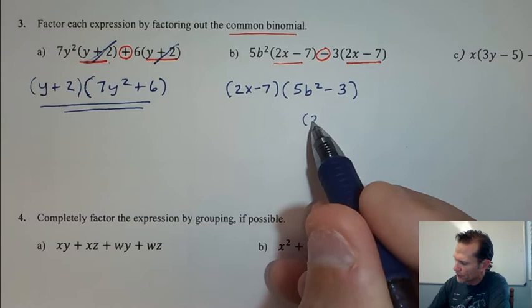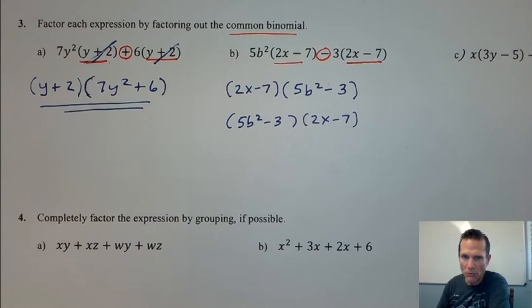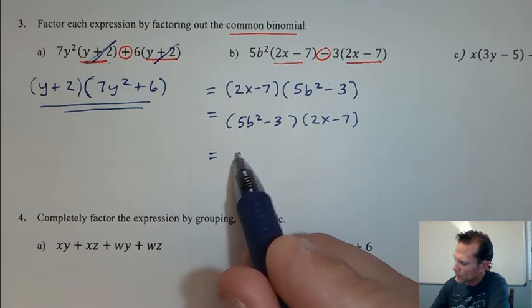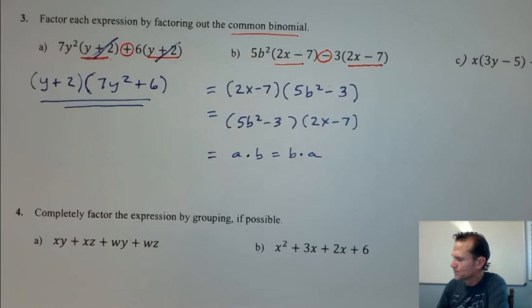Now some students choose to, and it's not wrong, they choose to write their common binomial on the right side and then put the leftover pieces in the front. And if you look there, those are the same thing because of something you learned back in elementary school. We learned that a times b is equal to b times a, called the commutative property of multiplication.